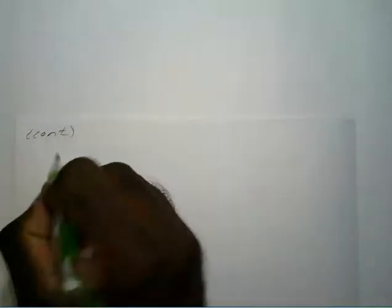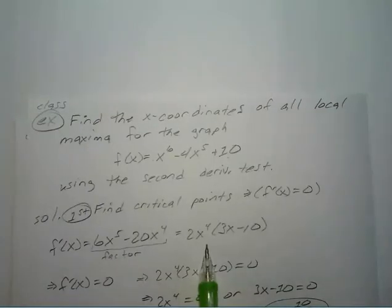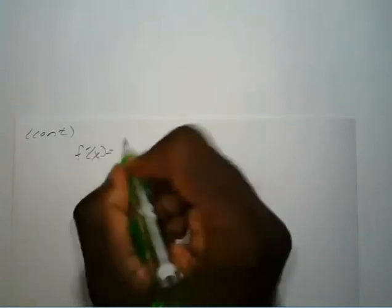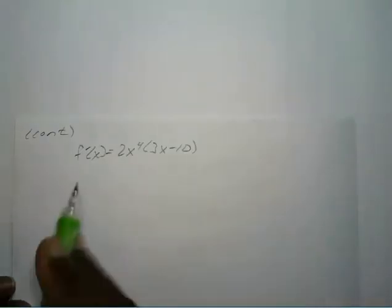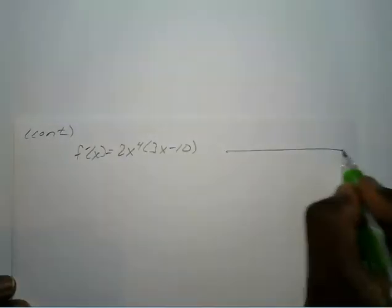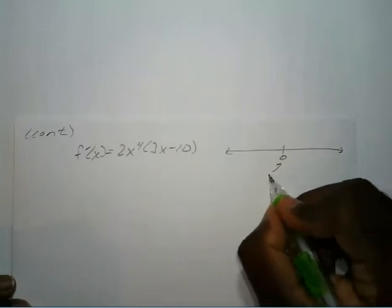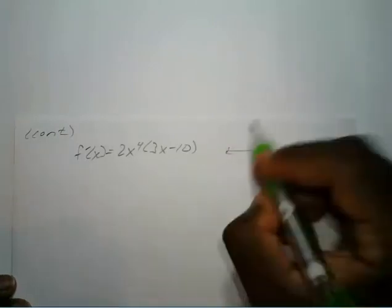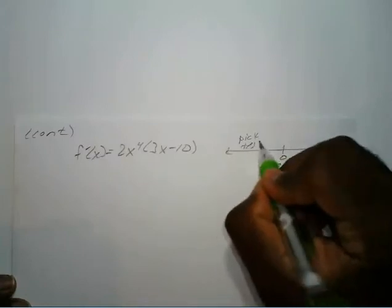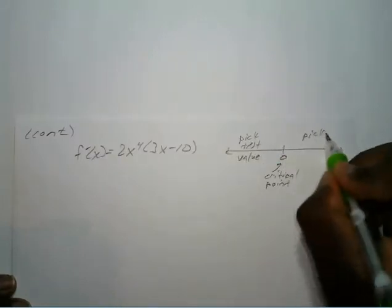Using the first derivative test, we know our first derivative is 2x to the 4th times 3x minus 10. And we know x equals 0 is our critical point. We pick a test value on either side of that critical point.